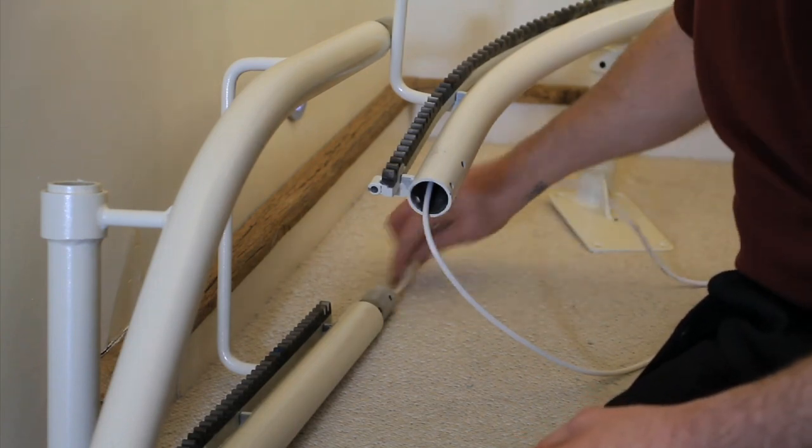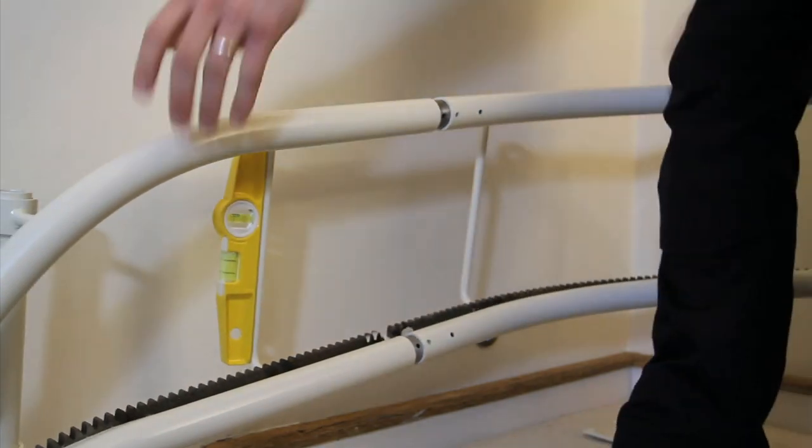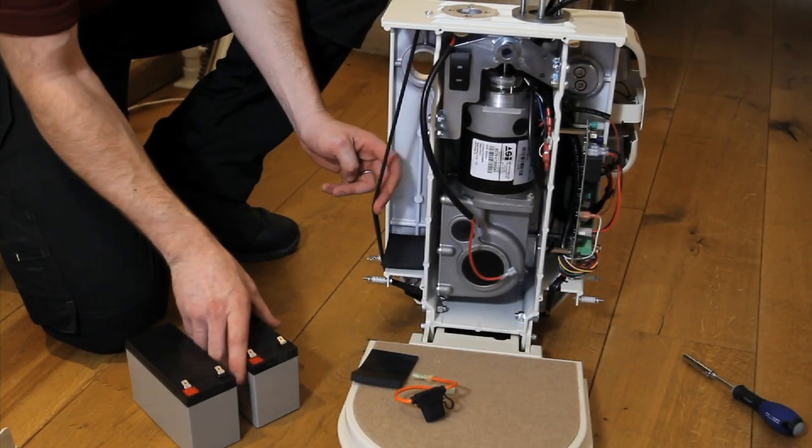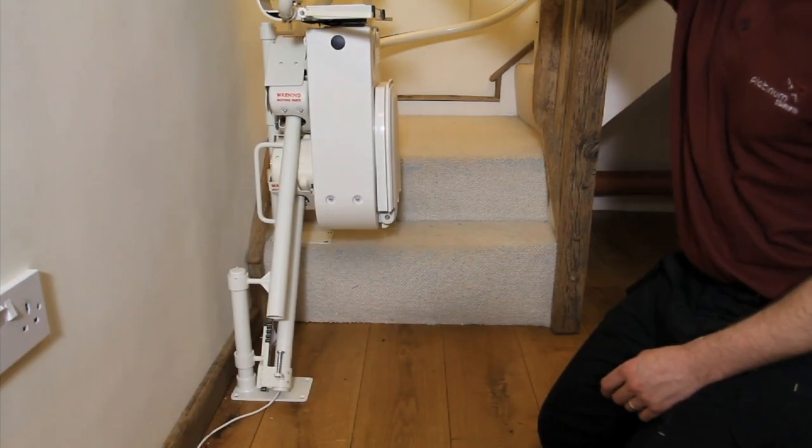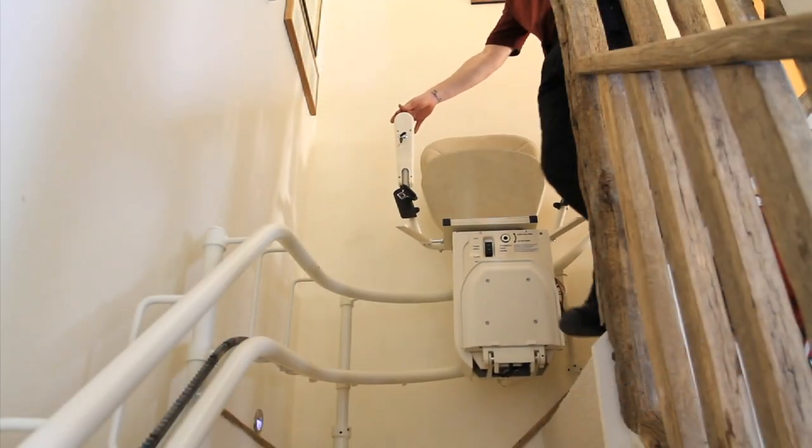Throughout the video we will show you how to fit the power supply and wall controls, as well as the track installation and the preparation of the carriage and chair. It will also show you how to safely mount and program the carriage, along with a series of basic checks to ensure the safe installation and easy use of a Platinum Curve Stairlift.